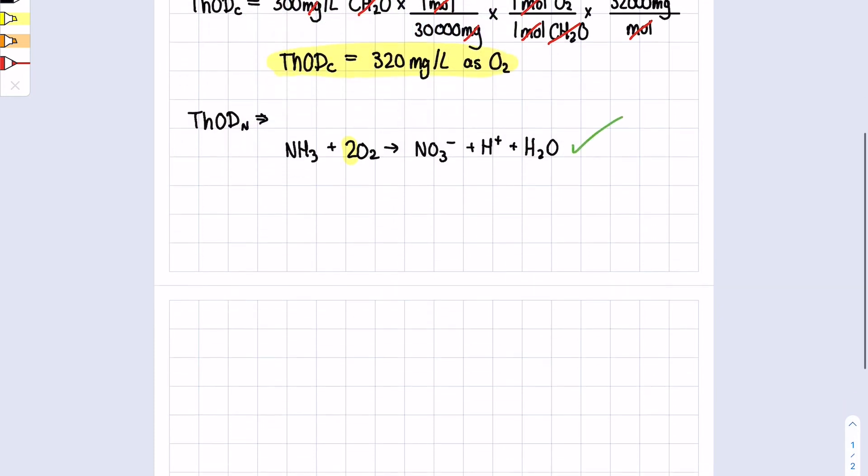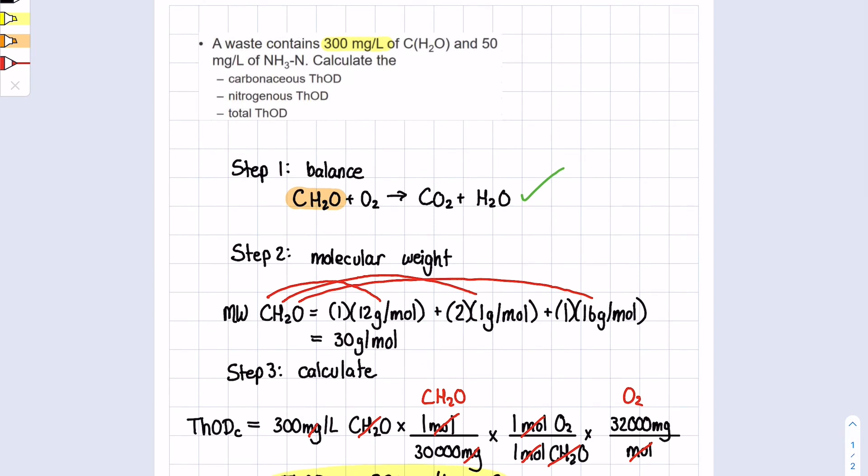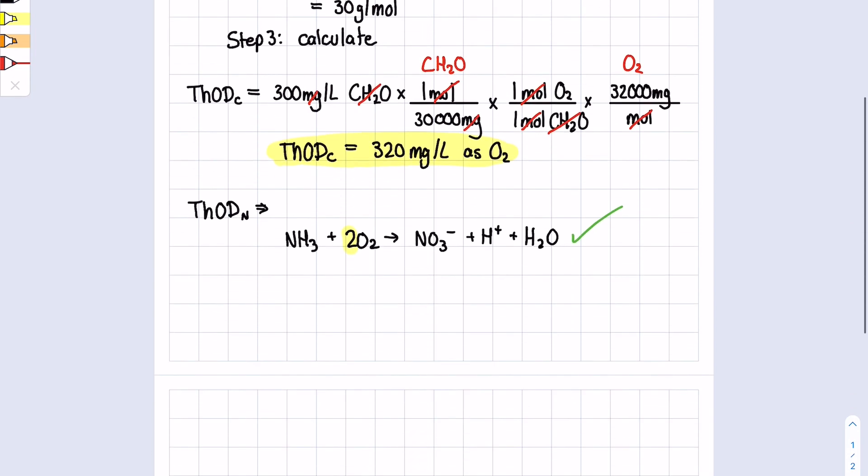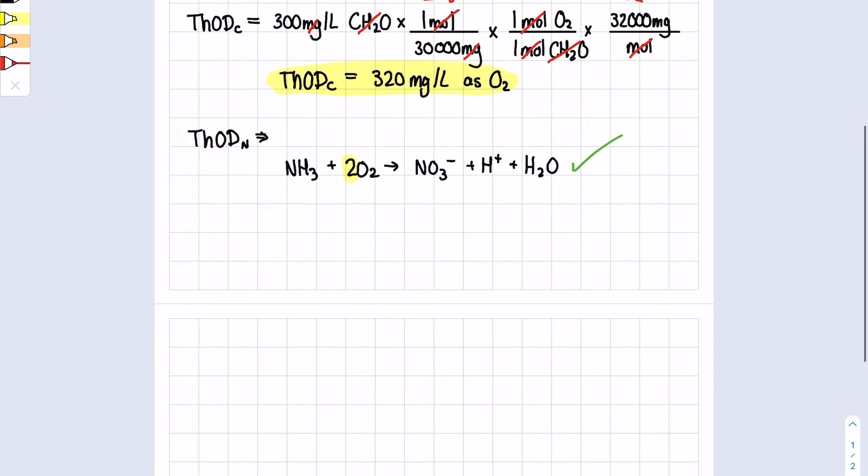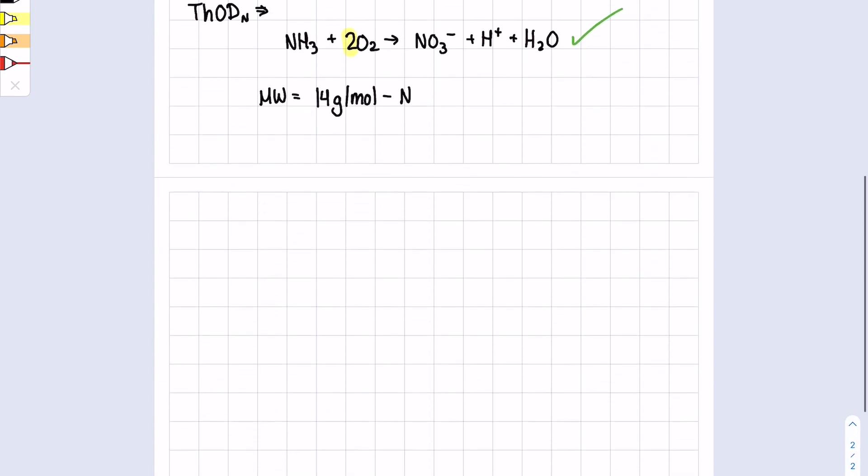Step two is to calculate the molecular weight. The question gave this as nitrogen, so the molecular weight of nitrogen equals 14 grams per mole of nitrogen. We'll move to step three: calculate. So we will now calculate the ThODn.